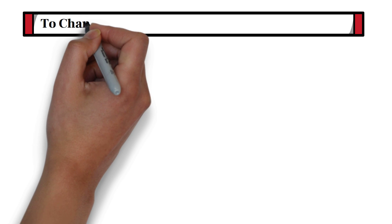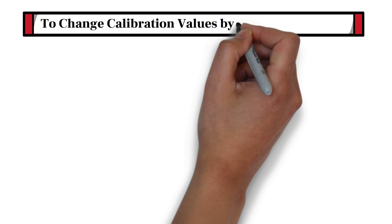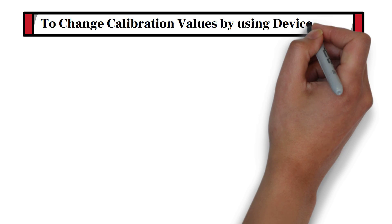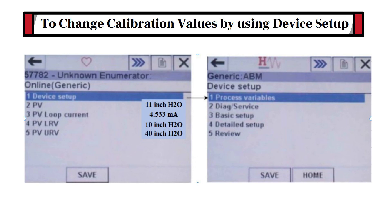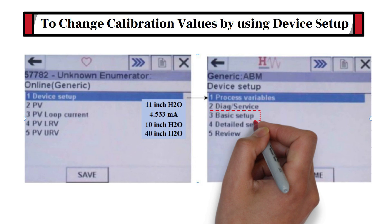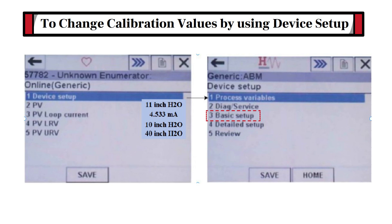Now let's learn how to change calibration values by using the device setup function. First of all, select the device setup function from the home screen. In the device setup menu, we can find various sub-menu options such as process variables, diagnostics or service, basic setup, detailed setup, and review. Select the basic setup option and press the enter button.